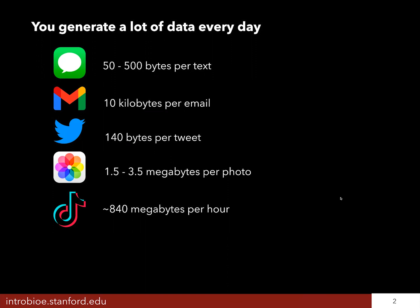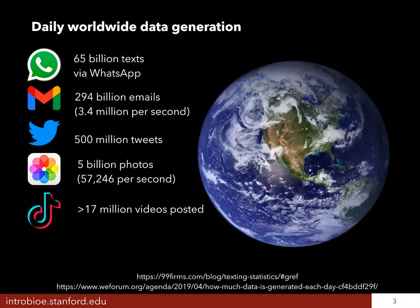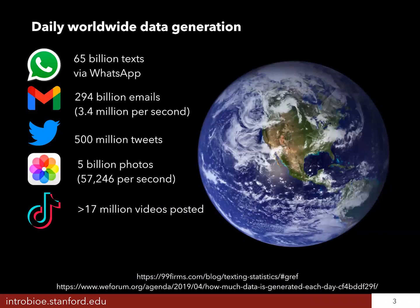Globally, it's estimated that we send about 65 billion texts via WhatsApp every day, and that's just one messaging service, so the true number of texts sent each day is probably much, much higher than that. We send about 300 billion emails every day, which is the equivalent of 3.4 million emails getting sent every second. There are about 5 billion photos taken every day and more than 17 million videos posted to TikTok every day. And all of this information that we generate, all of this data has to be stored somewhere.